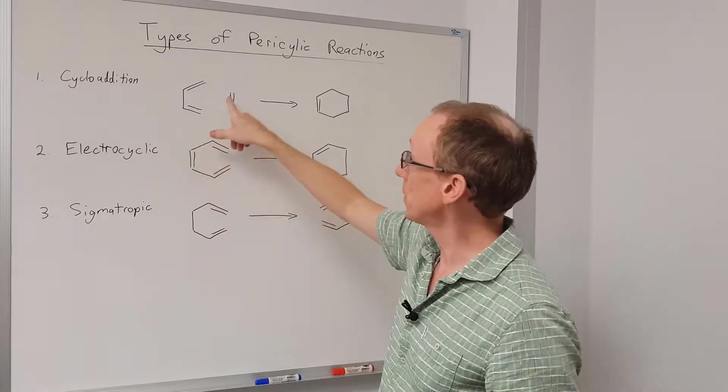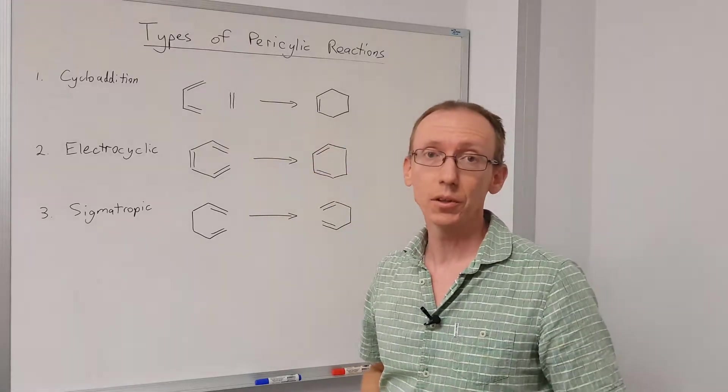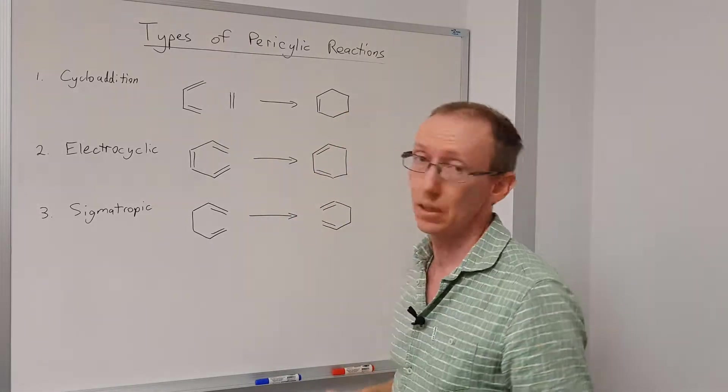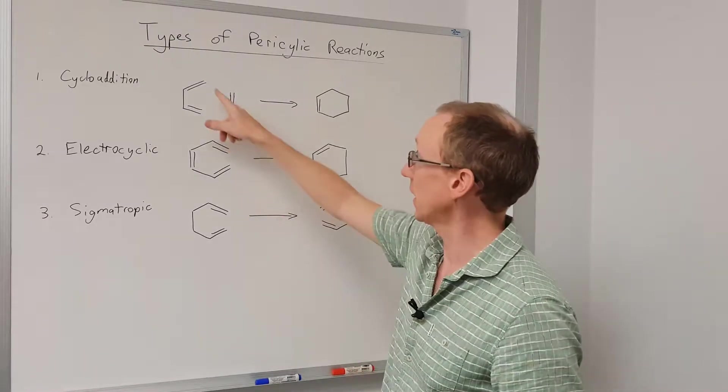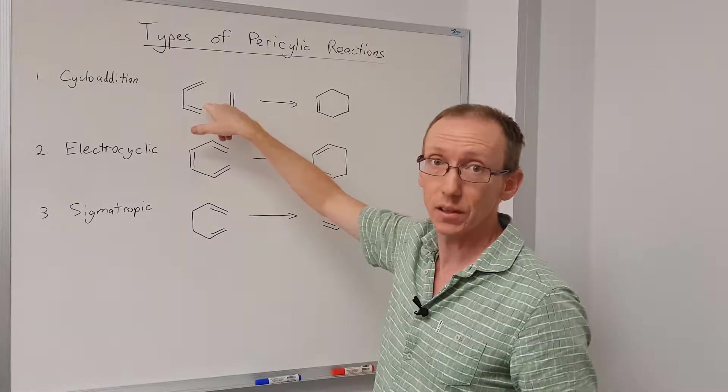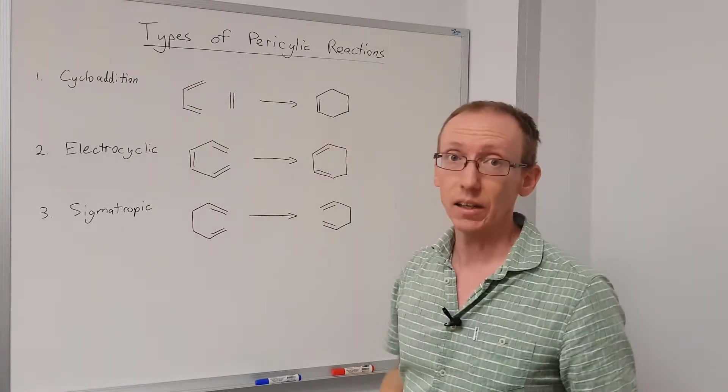Cycloaddition reactions are where you take two components and they add together to make one new cyclic molecule, and the most famous of these is a Diels-Alder reaction, which takes a 1,3 conjugated diene and an alkene that makes a cyclohexene.